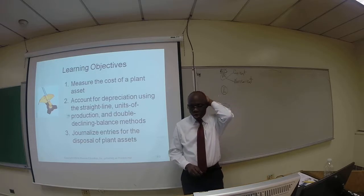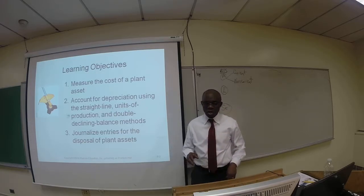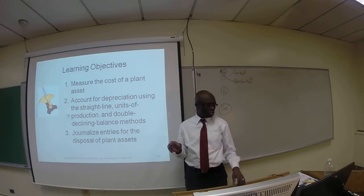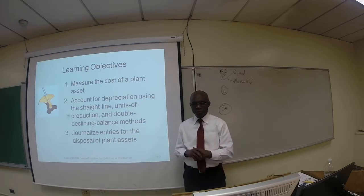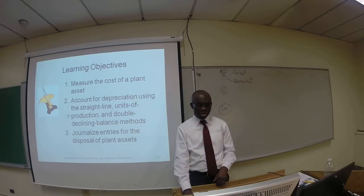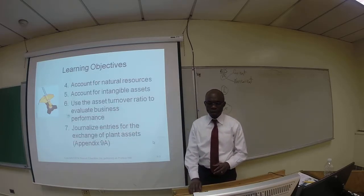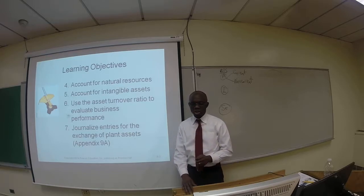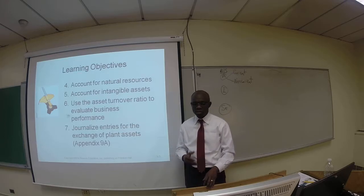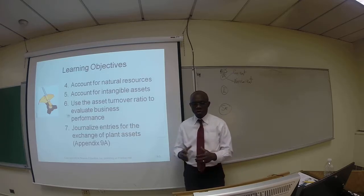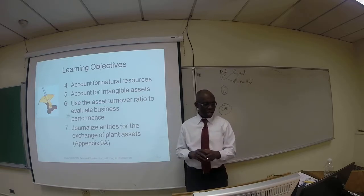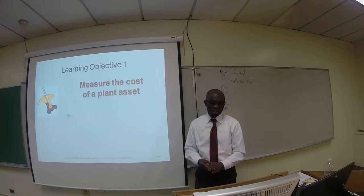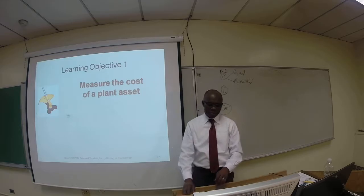Let's take a look at the learning objectives of this chapter. Number one, we are going to talk about how to measure cost of plant assets. Number two, how to record or account for depreciation using different methods. Number three, how to make journal entries for the disposal of plant assets, how to record natural resources and intangible assets, and then we will use the asset turnover ratio to evaluate business performance.